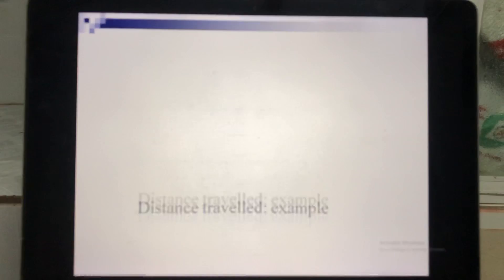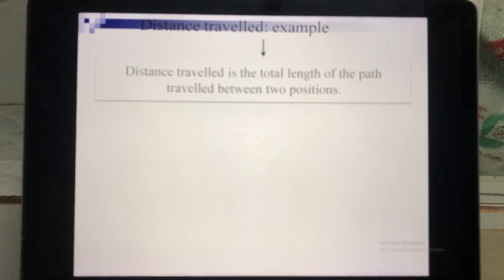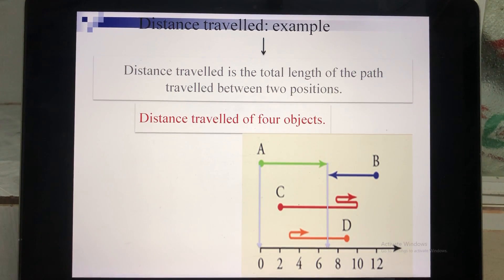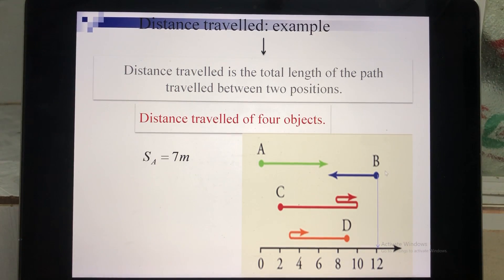Now one more example for distance traveled, using the same four objects. To calculate the distance traveled, you measure the actual path the object moves. For object A, you measure the path from start to end — that gives 5 meters. For object B, you measure the path from start to end — that also gives 5 meters.